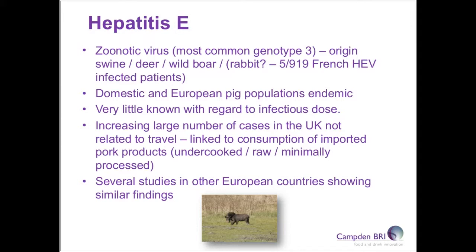Hepatitis E only manifests itself when humans become infected. It is the virus we know least about due to its relatively recent appearance as a foodborne virus and the inability to perform culture-based studies. It has become of increasing concern to the pork meat industry, as large numbers of people who have not been travelling have been found infected with a strain of hepatitis E circulating in pork products in Europe. The main concern is linked to the consumption of raw or undercooked pork products and the lack of data to confirm its heat resistance profile.